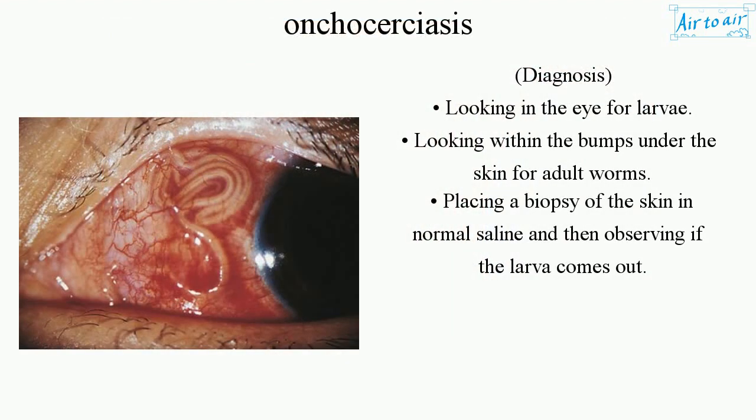Diagnosis. Looking in the eye for larvae. Looking within the bumps under the skin for adult worms. Placing a biopsy of the skin in normal saline and then observing if the larvae come out.